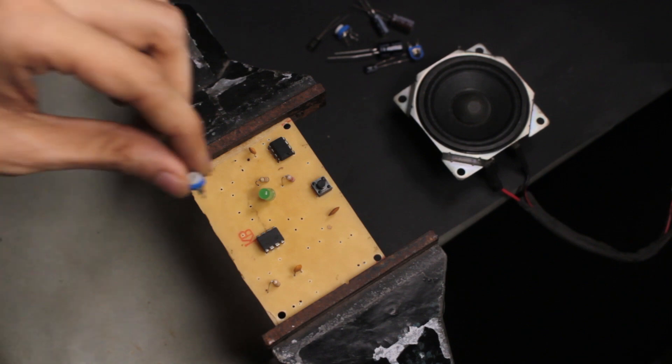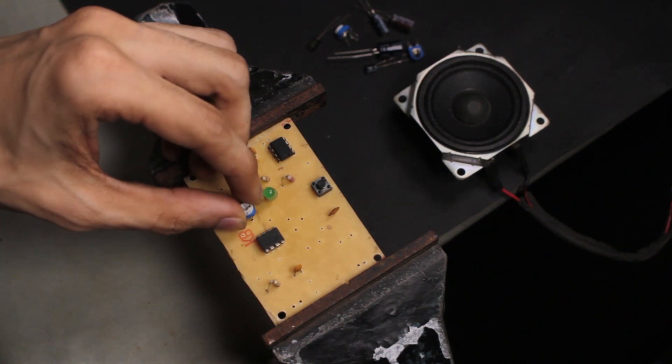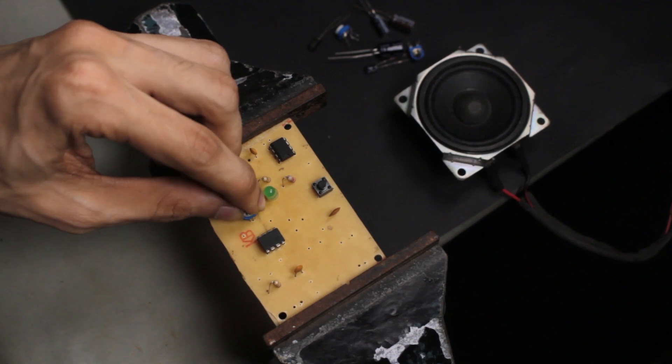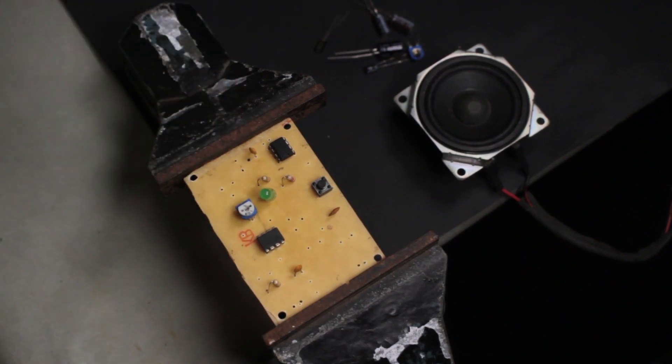The input signal is passed through a potentiometer R4 before it reaches the LM386. This pot is used to change the amplitude of the input signal before amplification.